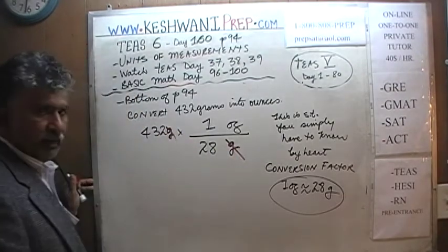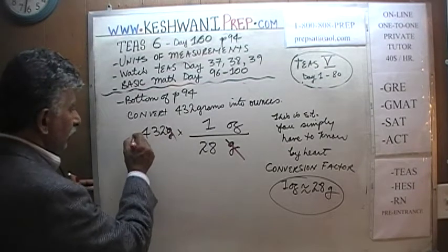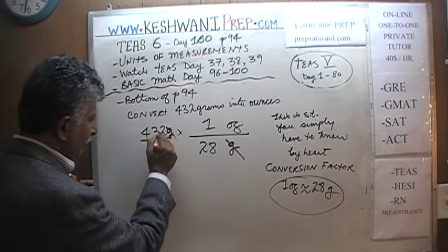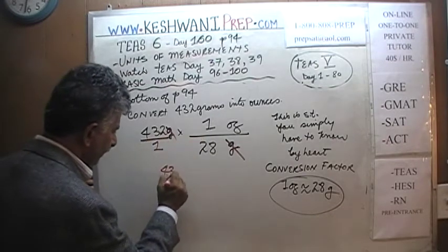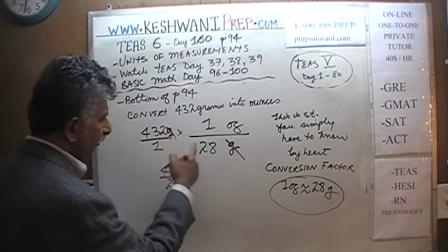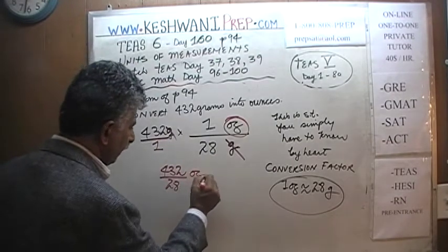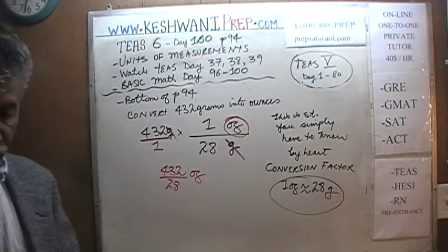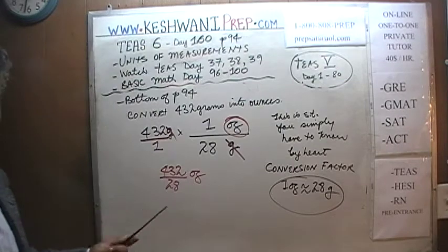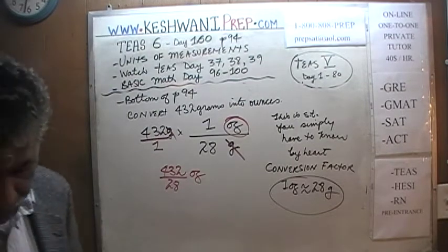We can divide top and bottom by grams and they cancel out. The answer is simply 432 divided by 28 — and the only unit left is ounces. All that remains is to figure out what that quantity is. We can do it with a calculator or by hand.